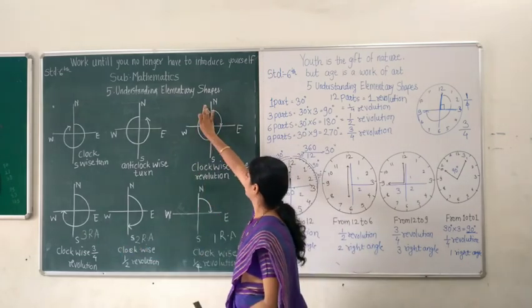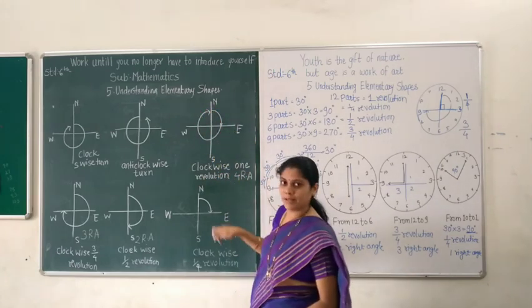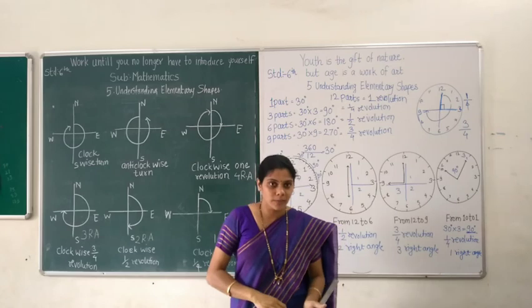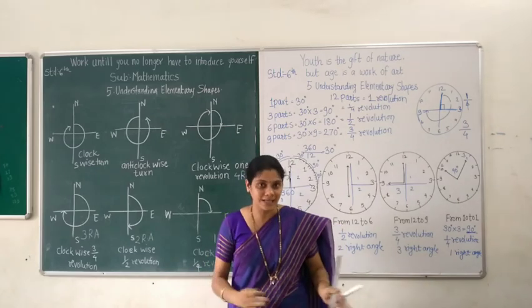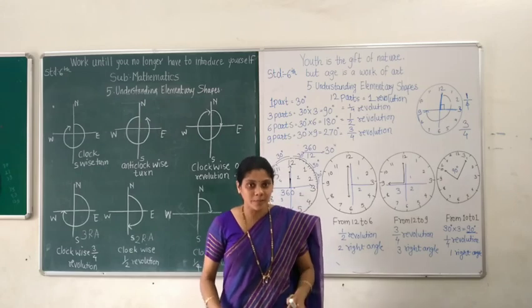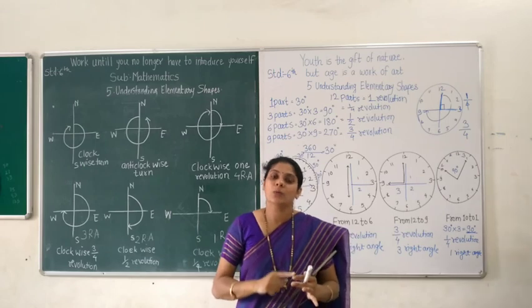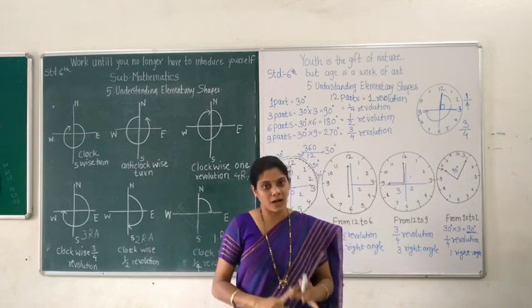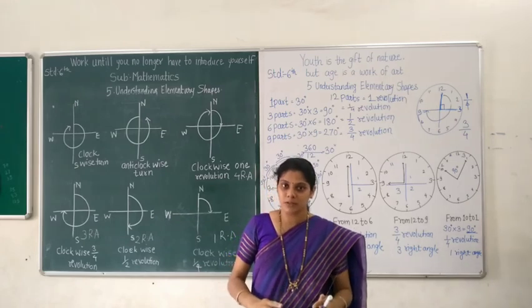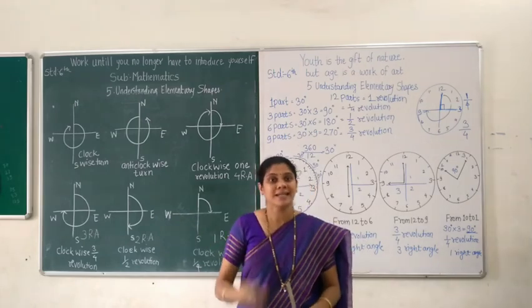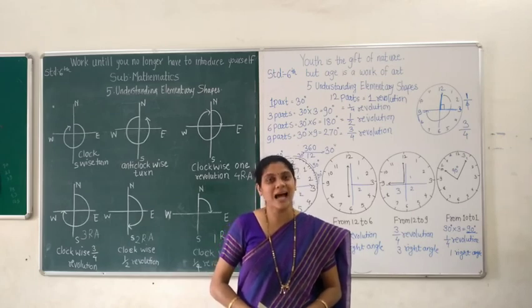All these are clockwise directions. But if the opposite arrow is used, then we write anticlockwise. While solving a problem on these terms, you have to mention whether it is clockwise or anticlockwise, how many revolutions are completed, and how many right angles are covered. With this information, in the next session we will solve exercise 5.2. Have a good day.